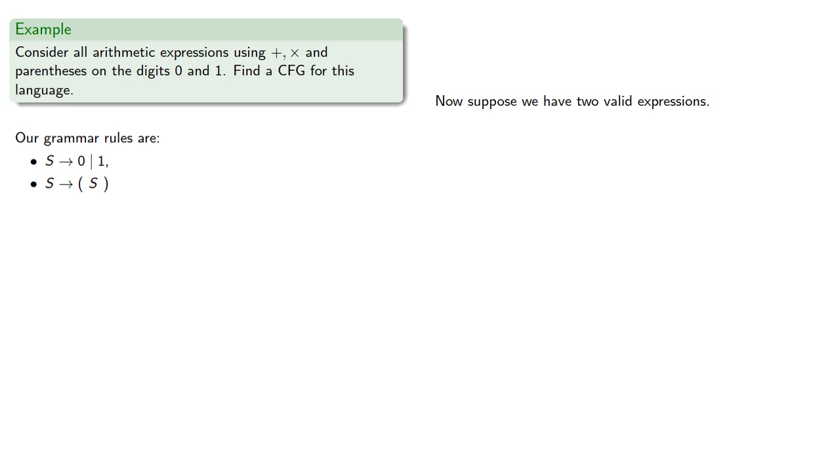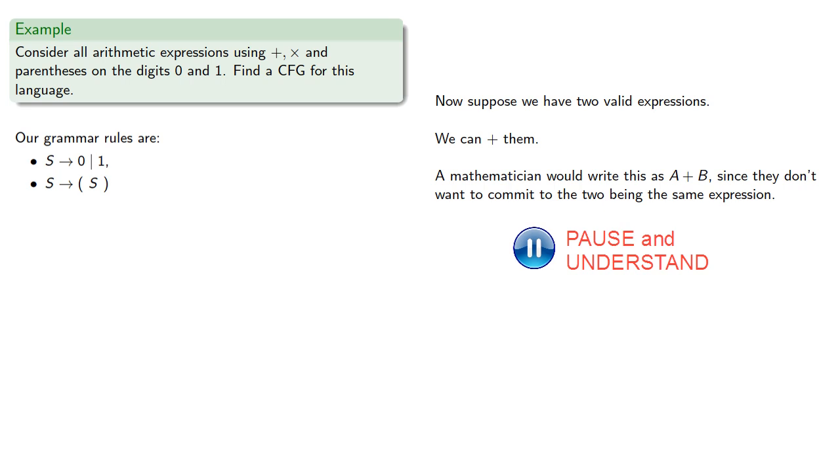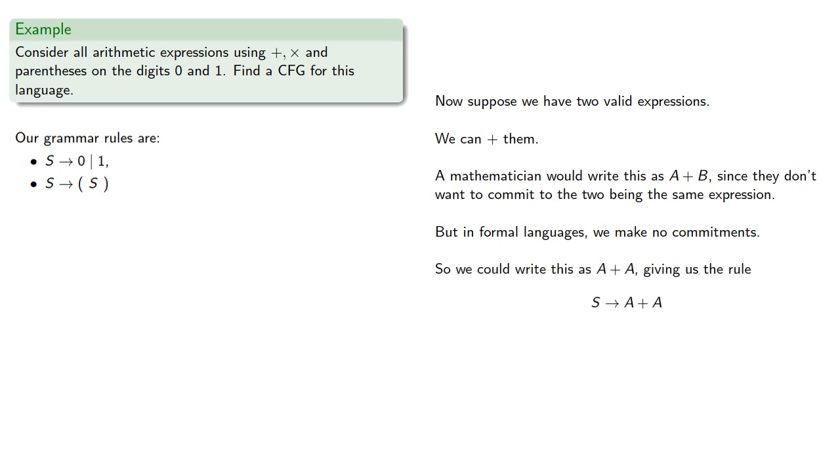Now, suppose we have two valid expressions. We can plus them. A mathematician would write this as a plus b, since they don't want to commit to the two being the same expression. But in formal languages, we make no commitments. So instead, we could write this as a plus a, giving us the rule S produces a plus a.